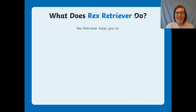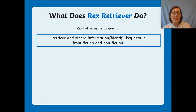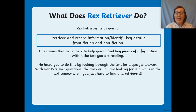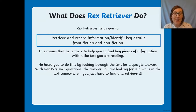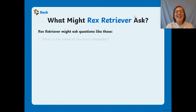You also need to copy down exact quotes from the text. Let's have a quick recap on what Rex the Retriever does — he helps us remember to retrieve and record information and identify key details from fiction and nonfiction texts. He's there to help you find key pieces of information within the text. With direct retrieval questions, the answer is always in the text — you've just got to find it and pull it out.